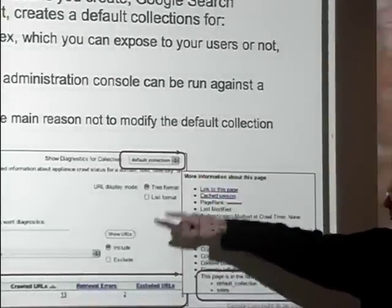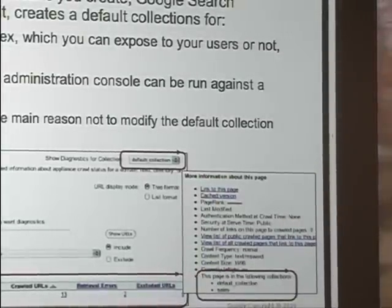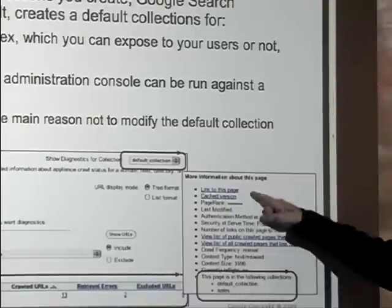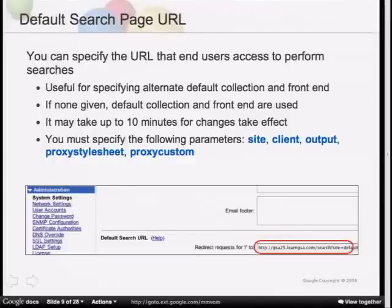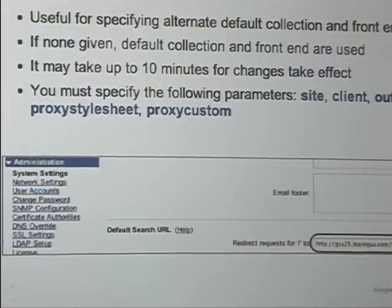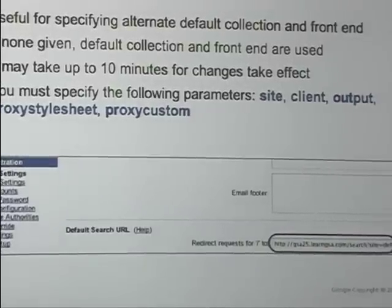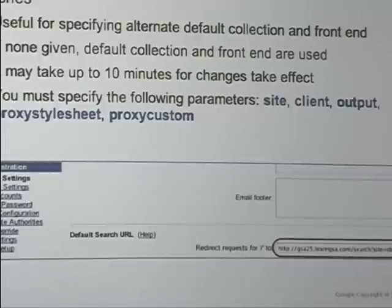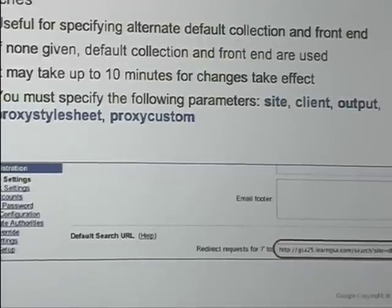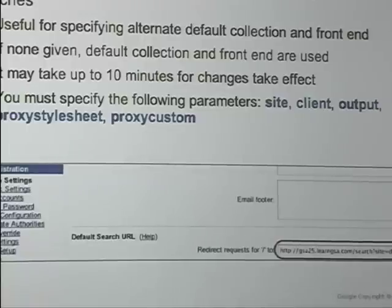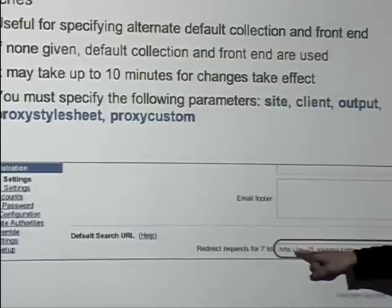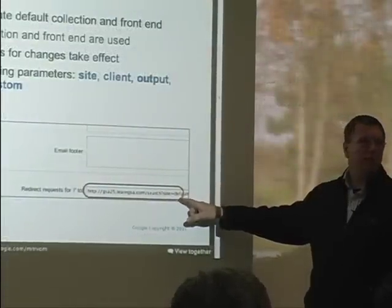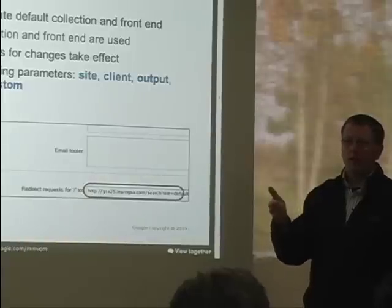When you select a different collection in crawl diagnostics, only the URLs in that collection will show up. When you drill down on a document, you can see which collections it's a member of — for example, 'default collection' or 'sales.' There's also a default search page URL under Administration > System Settings. When a user goes to the GSA host and enters just the host name, they automatically get a search page that defaults to the default collection and the default front end. You can specify a different collection by URL, but you'll need to include all required parameters — 'site' is one of them, and the 'client' parameter for the front end name must also be set.